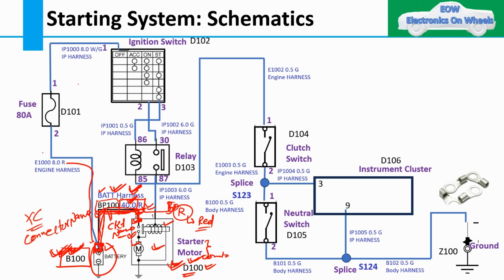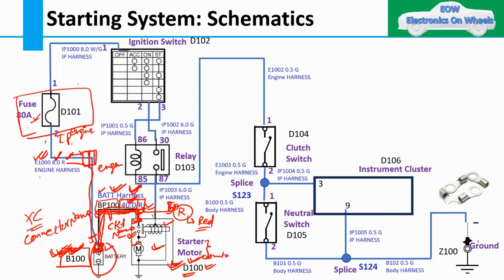Let me take one more example. From battery, I'm going to the engine harness where this particular fuse box is located. Now suppose your battery is in engine harness but this particular fuse is in IP or body harness — then what do you do? You have to give one inline connector. This side would be engine harness and the other side would be body harness or IP harness.